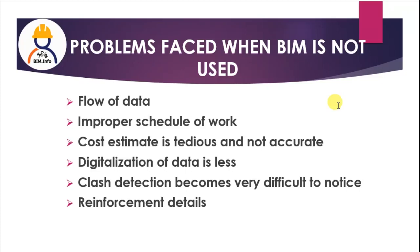Because of this, clash detection becomes very difficult to notice. Clash detection requires proper digital tools. For example, reinforcement details — you draw in a layout using beam spacing, diameter and spacing, top and bottom bars. Main bar is 10 mm diameter, distributor bar is 8 mm diameter. Using paper, cross-checking and verifying data types is very difficult.